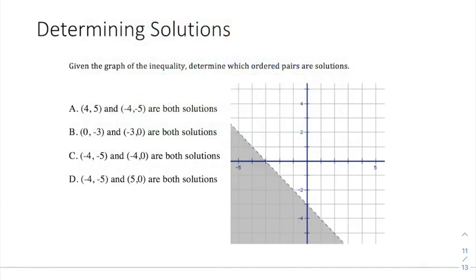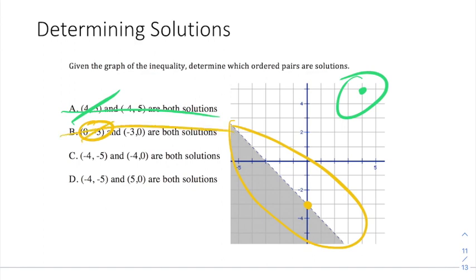Lastly, I just want to make sure we understand the idea that the shaded region represents all the ordered pairs that are solutions to the inequality. So this multiple choice question asks us which points are solutions. If we look at (4, 5), it's over here, not in the shaded region. So it's not a solution. So the answer is obviously not a. (0, -3) is on the dotted line. But remember, the dotted line is a boundary, not part of the solutions. So (0, -3) is not a solution. So b is out. (-4, -5) is right in the middle of the shaded region. That makes it a solution. (-4, 0) is also in the shaded region. That also makes it a solution. So c is correct. From part c, we know that (-4, -5) is a solution. But (5, 0) is over here in the non-shaded area, so d is out. So the only correct answer here is c.